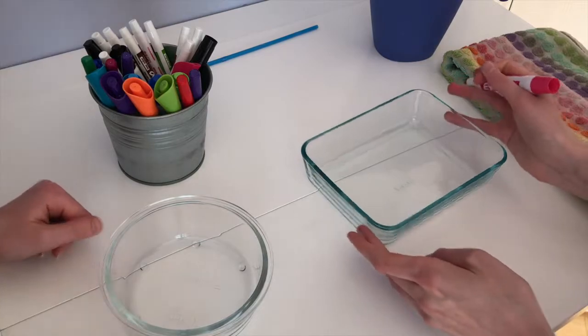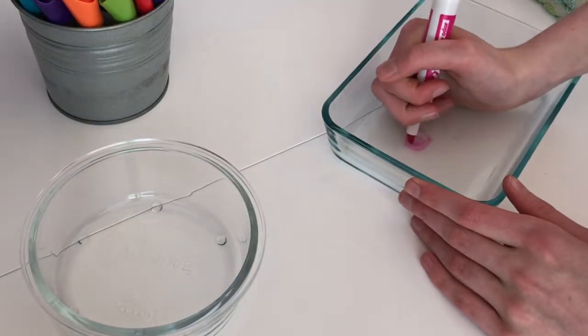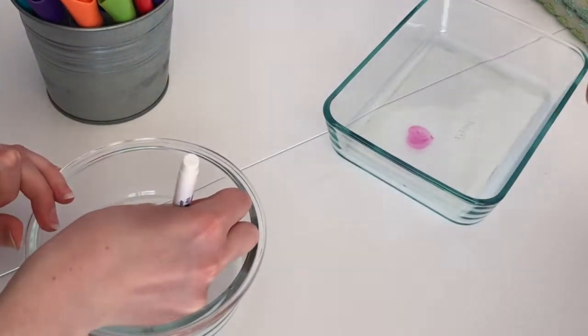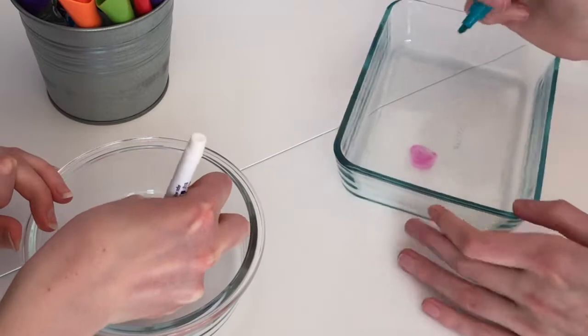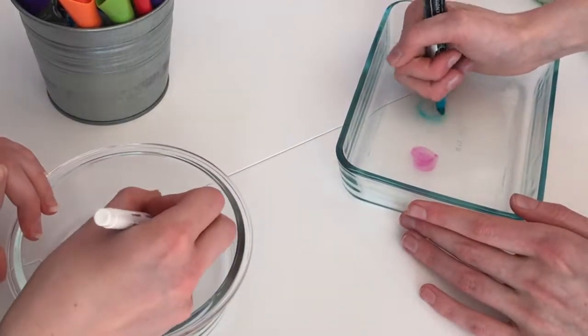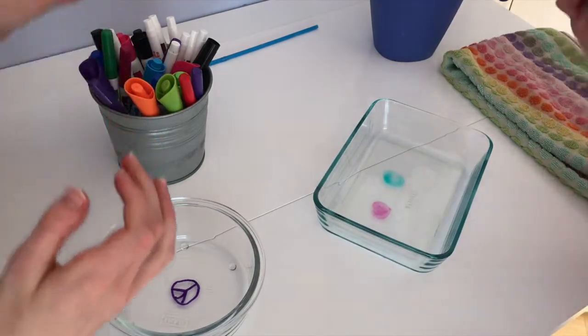And the second thing we've learned is that you can use a straw to kind of blow it around and kind of make your shape dance. I'm just going to see what happens if I just do a normal circle. Yeah, I'll try that too.